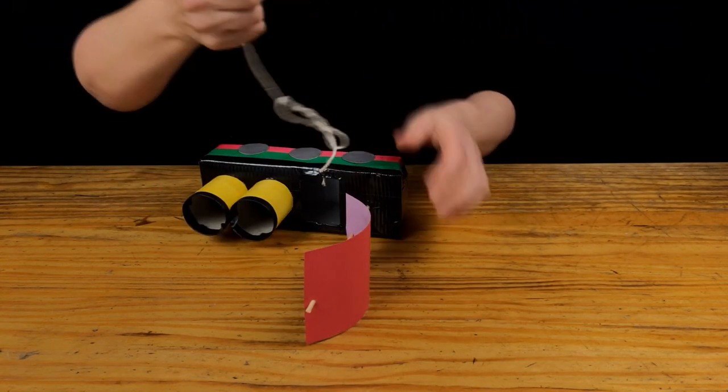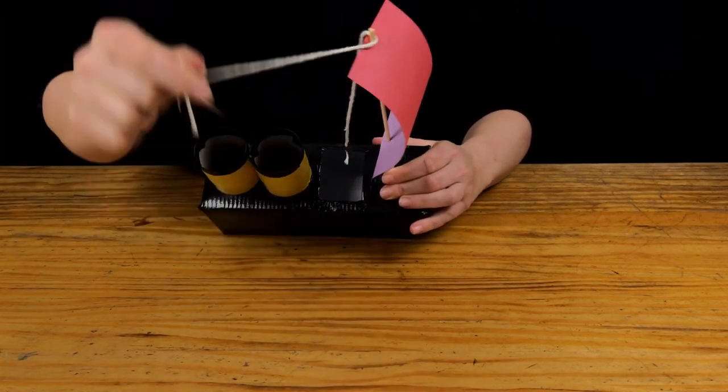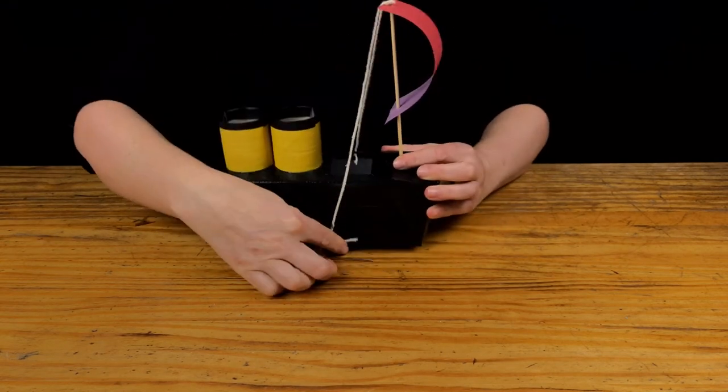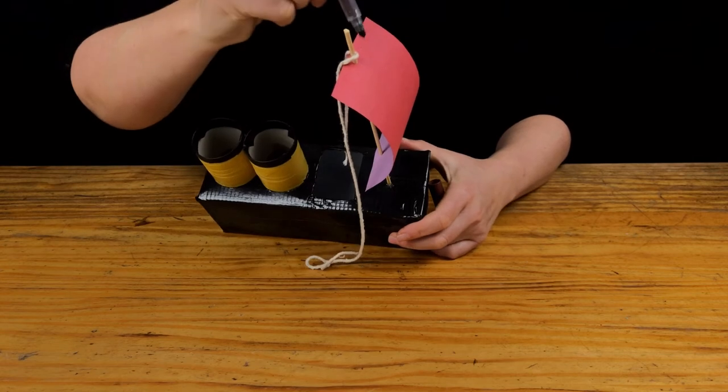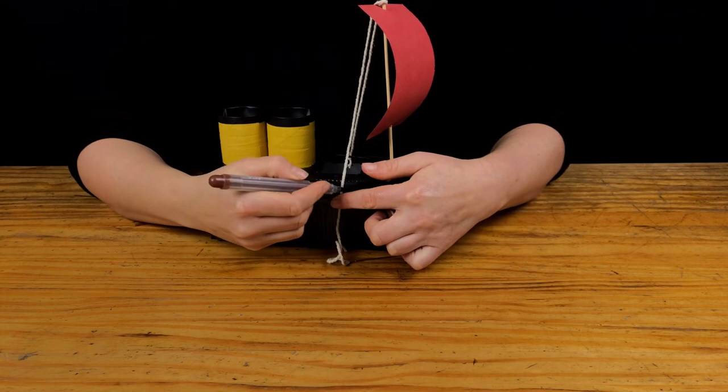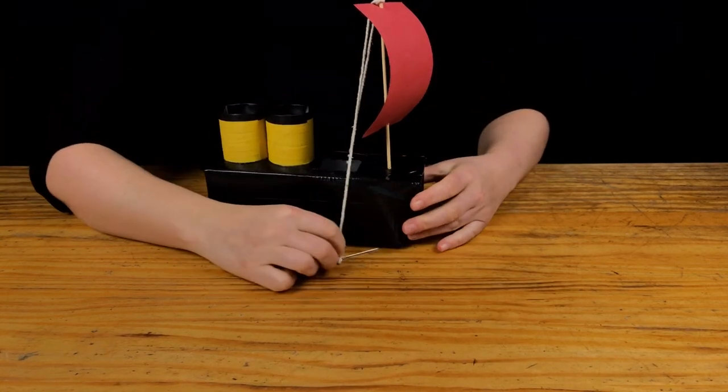Loop the string around the top of the sail and down to the other hole. Mark the middle of the string with a pen and mark the end by the second hole. This will help us to position the flags equally on each side. Unloop the string.